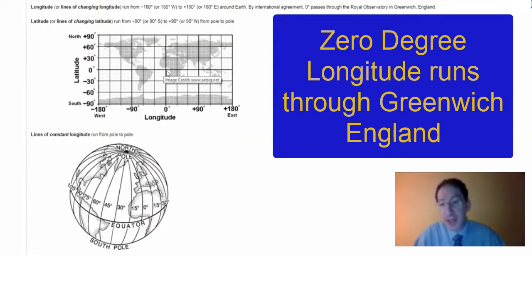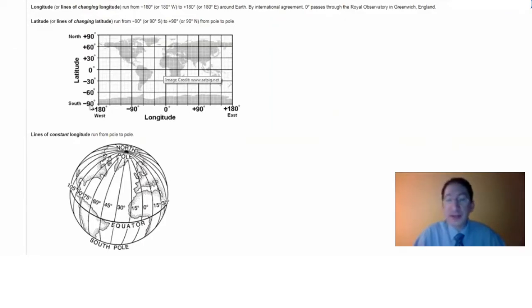So lines of changing latitude run from 90 degrees south at the south pole, which we denote negative 90, through 90 degrees north at the north pole, which we denote positive 90.